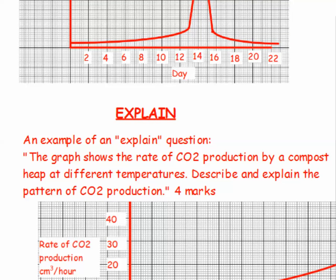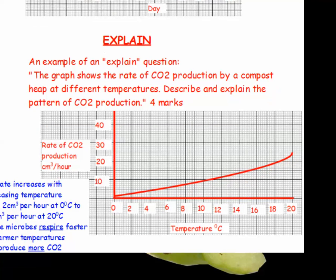Explain questions mean: use your knowledge and understanding to give the scientific reasons behind what you see. Here's an example — the graph shows the rate of CO2 production by a compost heap at different temperatures. Describe and explain the pattern of CO2 production. Let's see if we can get four marks out of this. Have a look at the shape of the graph, what values can you give, and then try to explain what's happening.